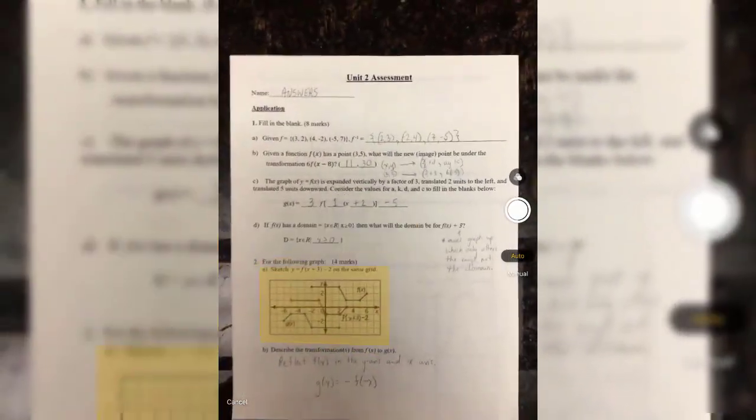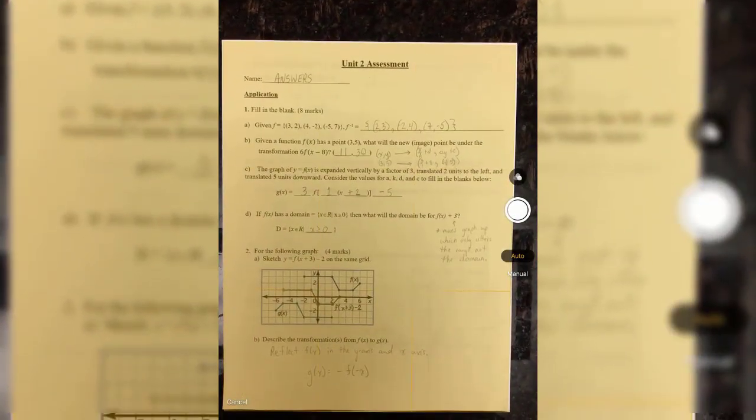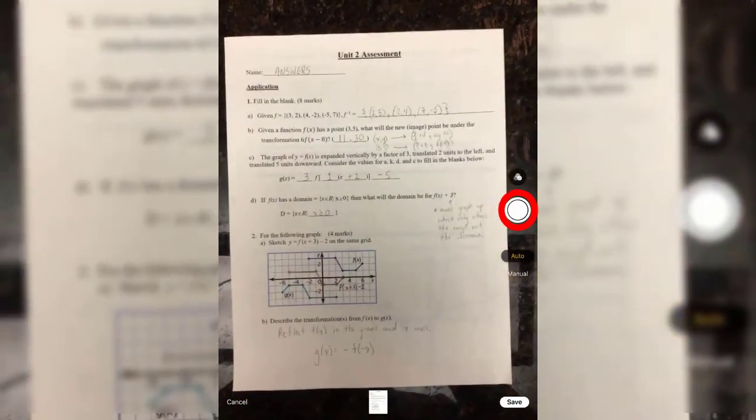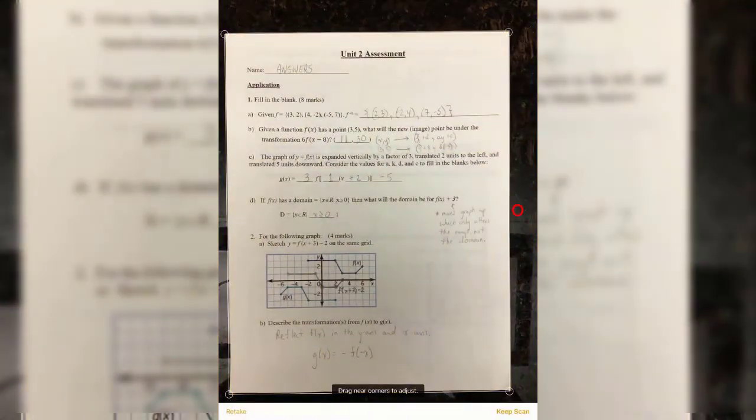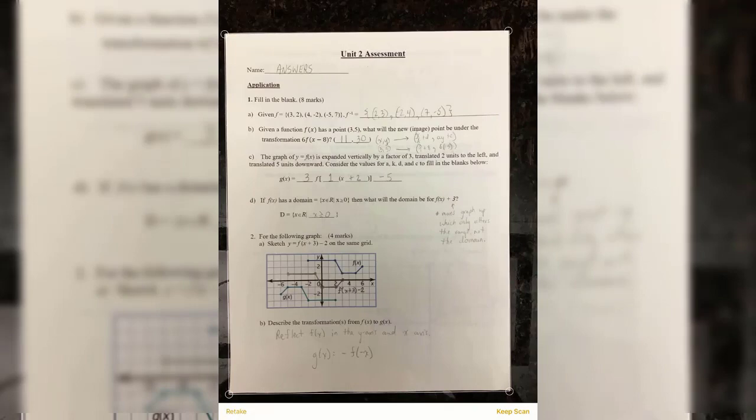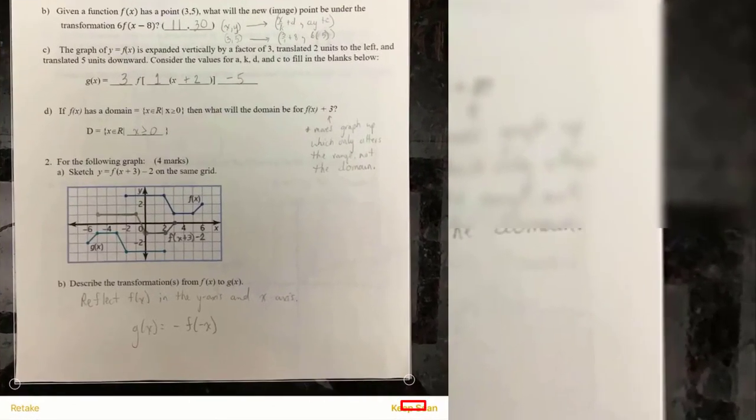Position the page so you see it turn yellow and it will auto scan. Or you have the option to take a picture. Drag corners as you see fit, then select Keep Scan.